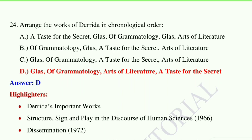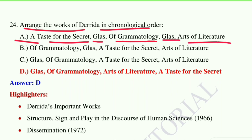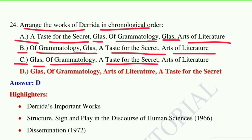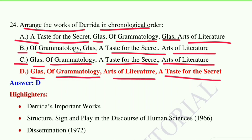Question number 24: arrange the works of Derrida in chronological order. Option A: A Taste for the Secret, then Of Grammatology, then Acts of Literature. Option B: Of Grammatology, then A Taste for the Secret, then Acts of Literature. Option C: Of Grammatology, then Acts of Literature. Option D: Glas, then Of Grammatology, then Acts of Literature, then A Taste for the Secret. Option D is correct: Glas came first, then Of Grammatology, then Acts of Literature, and A Taste for the Secret.